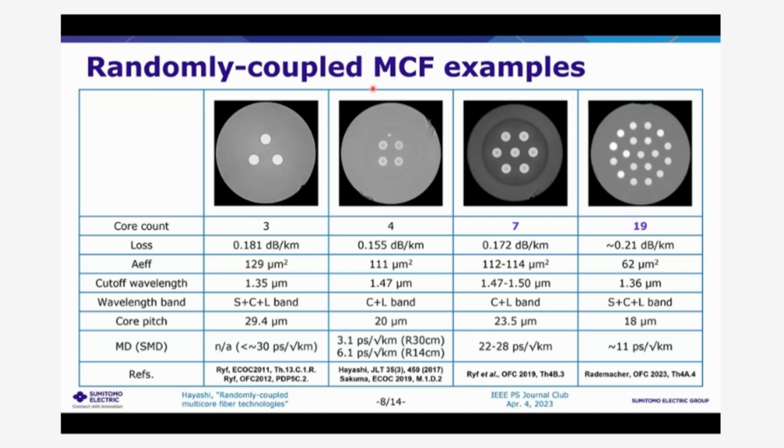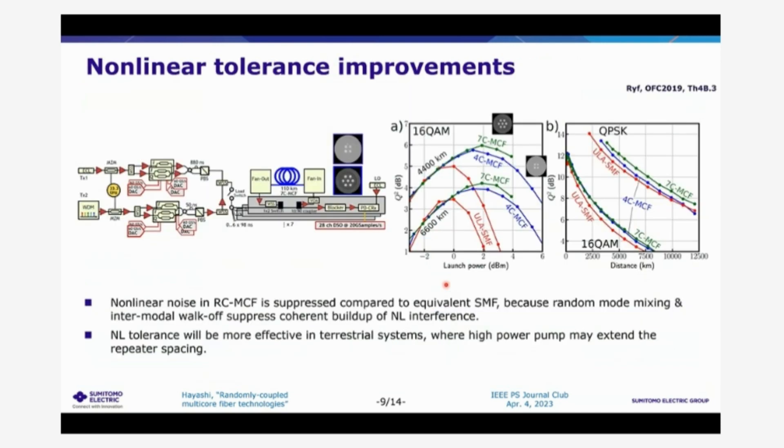So the randomly coupled multicore fiber is more scalable on the core count and very fitted to increase the transmission capacity of the multi-core fiber for higher capacity demand.